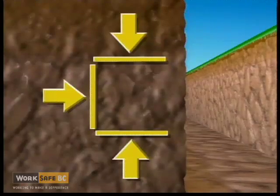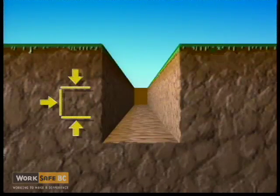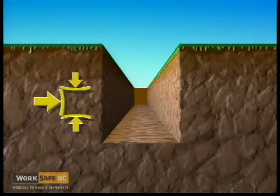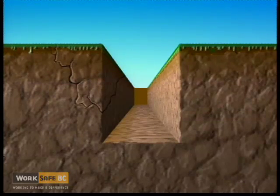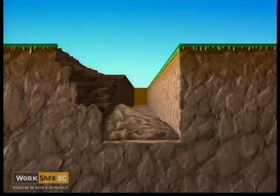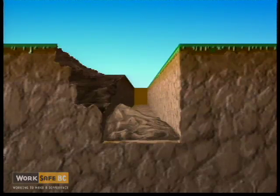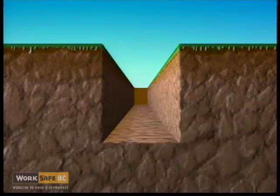Once a cut is made, the stresses become unequal, and the rate of collapse depends on the soil strength and on one or more of the causes of soil instability.